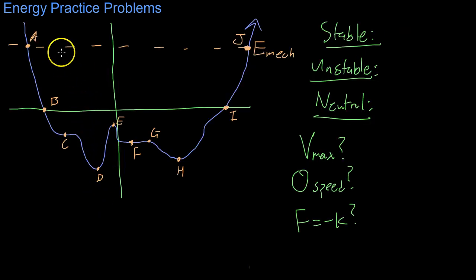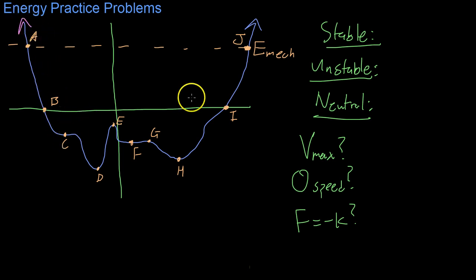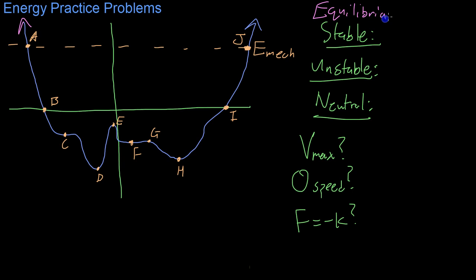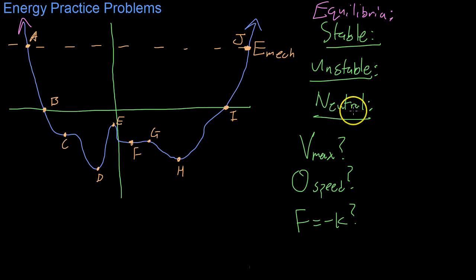The last practice problem involves analyzing energy diagrams. We're going to look at this energy diagram and analyze different labeled points. First, we'll find the equilibria and categorize each point as stable, unstable, or neutral. Then we'll find where the maximum speed occurs, where the speed is zero, and where the force is negative.